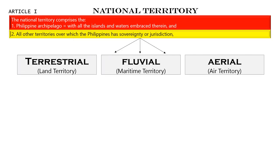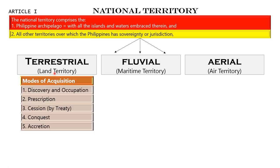When reading Article 1 about National Territory, you have to connect it to your public international law. As far as land territory is concerned, recall the modes of acquisition: discovery and occupation, prescription, cession by treaty, conquest, and accretion. This doesn't come up too often in bar exams.